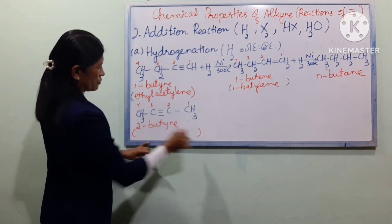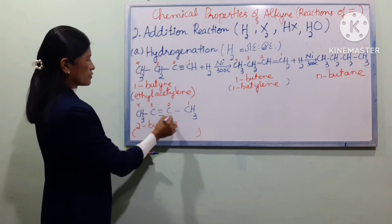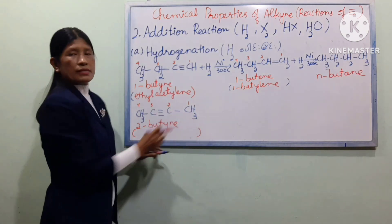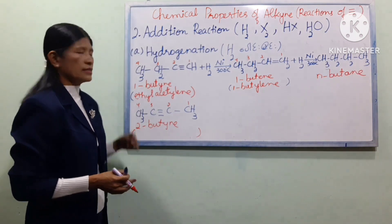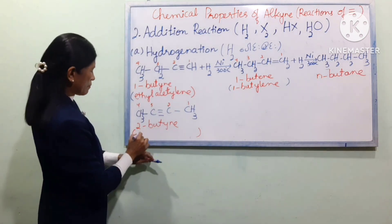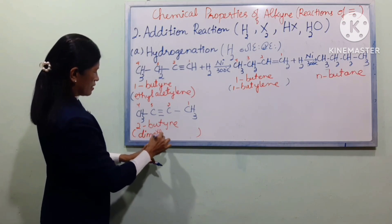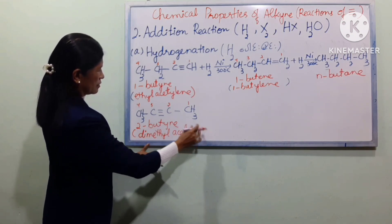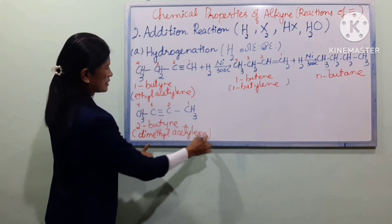With that naming system, a compound with CH3 groups on both ends of the triple bond — CH3–C≡C–CH3 — is called 2-butyne or by its common name dimethylacetylene.